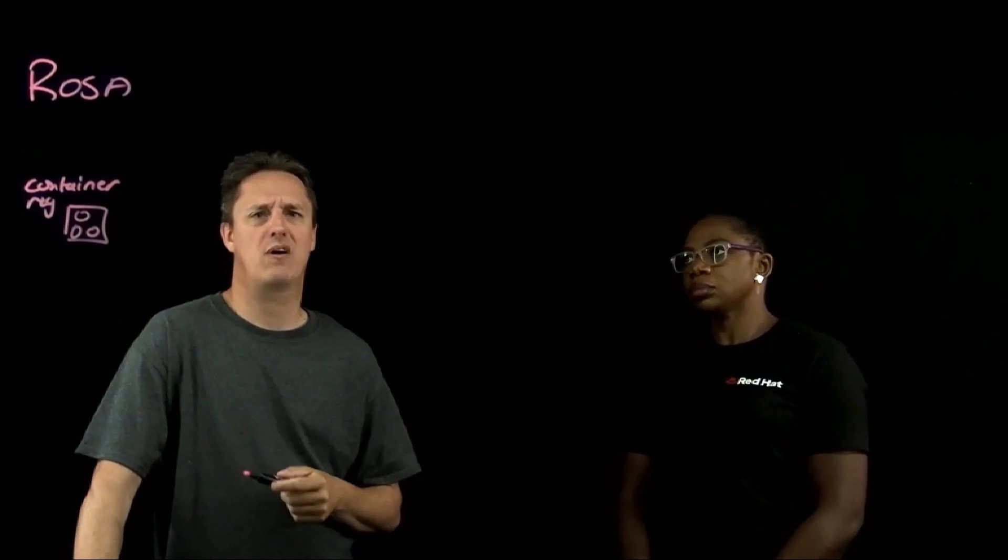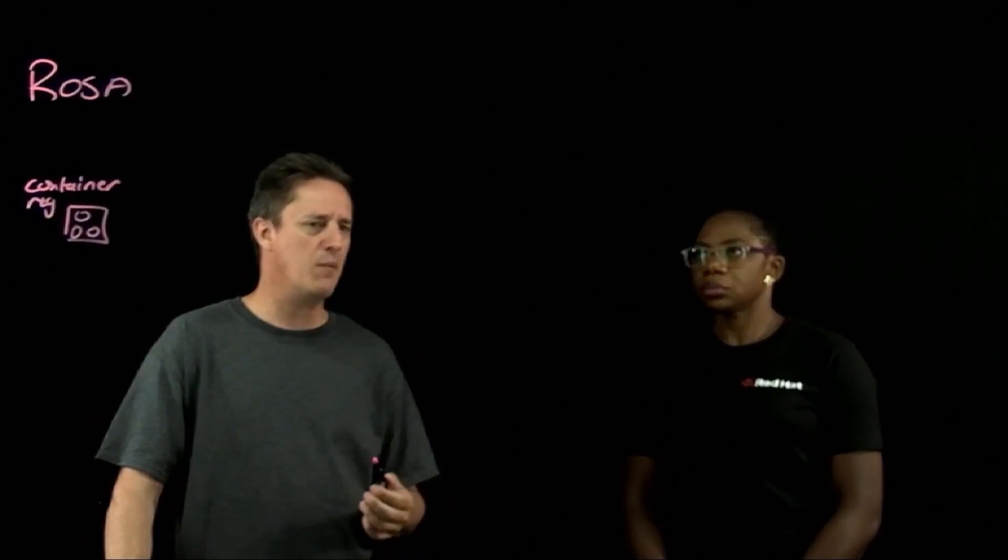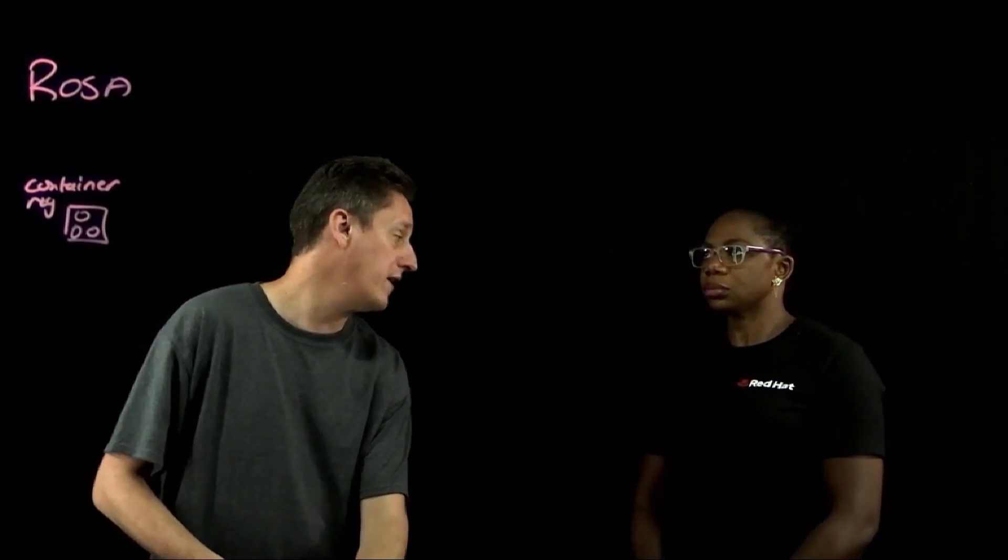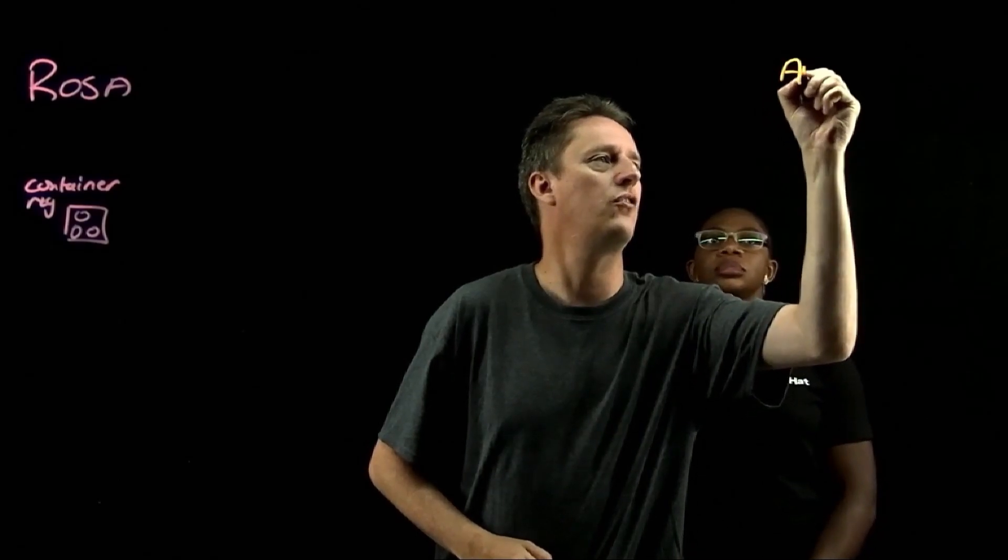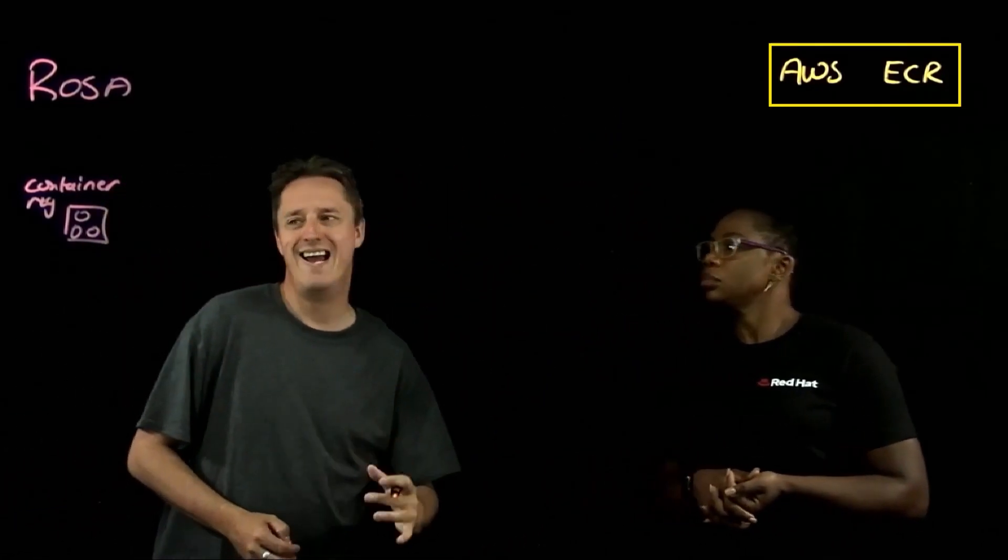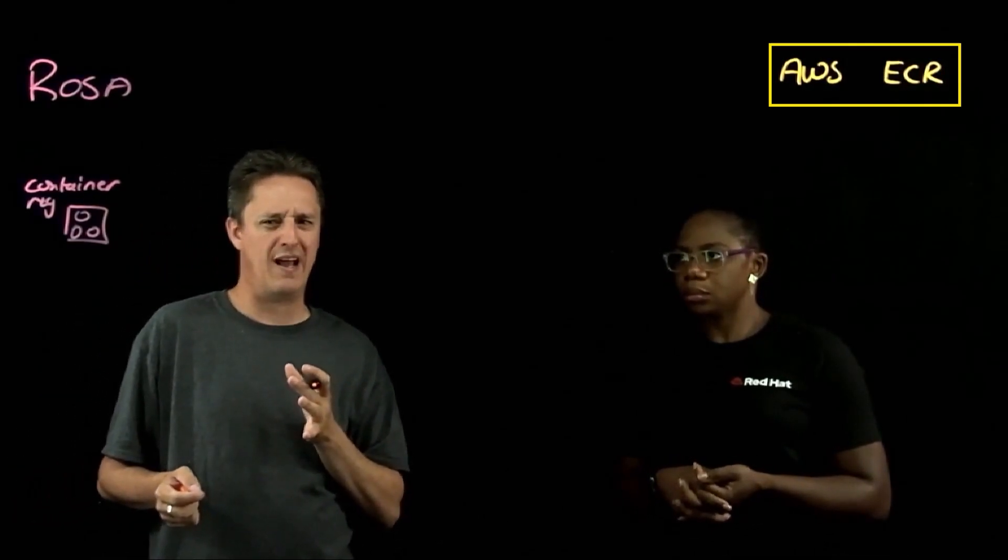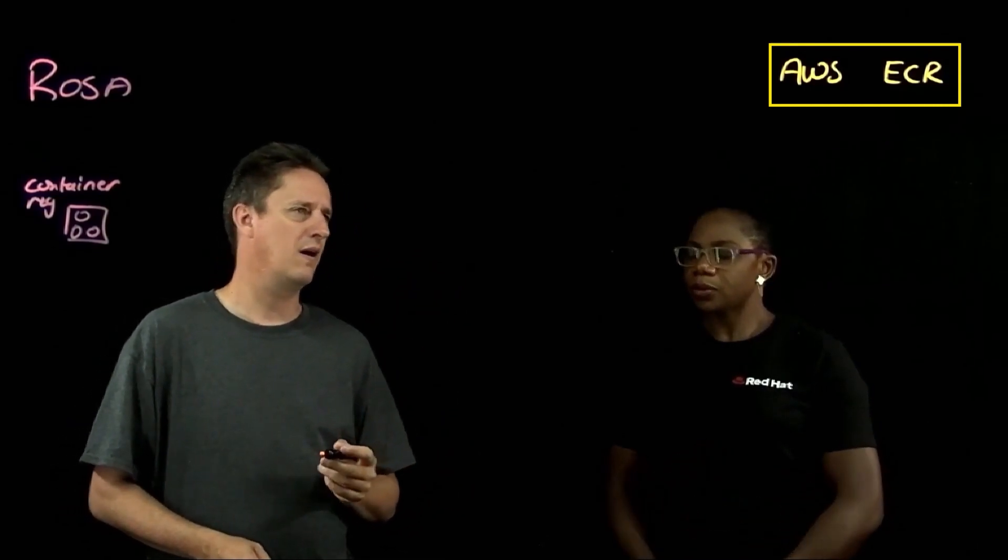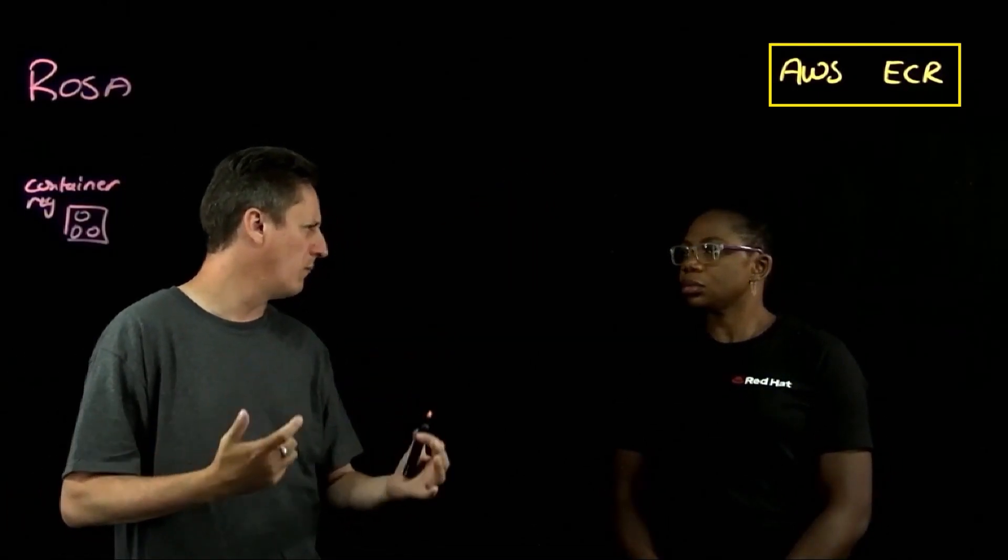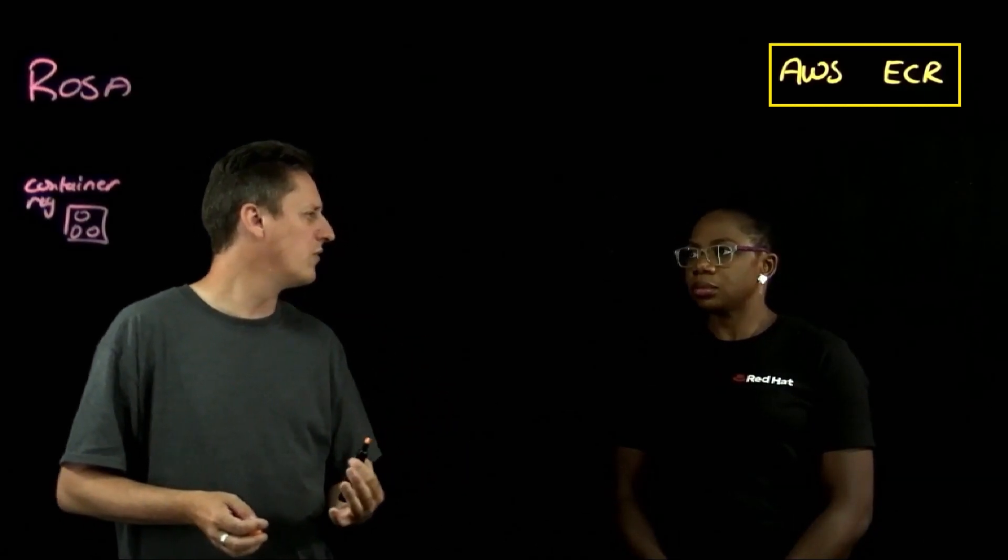That said, many of the customers I work with have already invested in their own container storage investments. Many of them are using AWS services, one of them being the Elastic Container Registry, ECR. So what about customers that want to take advantage of AWS ECR or are already using ECR? Can they store their containers in ECR and still consume them from OpenShift? And what building blocks, what components are needed to facilitate this? I think it's worth noting that whether they're using the internal container registry or whether they're using something like ECR, they behave in very similar manners. There's still a push and pull of those images. It's really about how do they authenticate to the ECR platform.